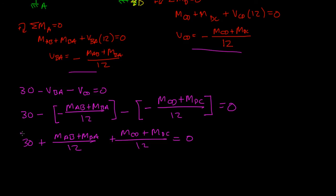This becomes 30 plus MAB plus MBA over 12 plus MCD plus MDC over 12 is equal to 0. What I can do here is I can multiply everything by 12 to cancel this out. So, 30 becomes 360, 30 times 12, and I bring this 360 to the other side. I end up with MAB plus MBA plus MCD plus MDC is equal to negative 360. Just a little bit of algebra.